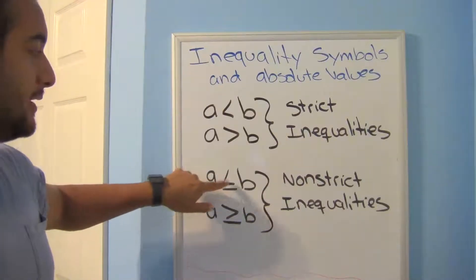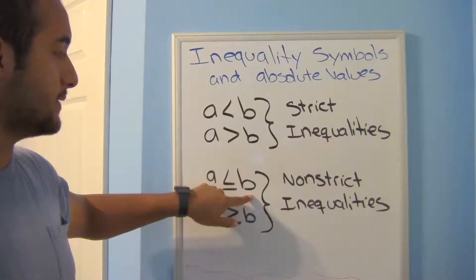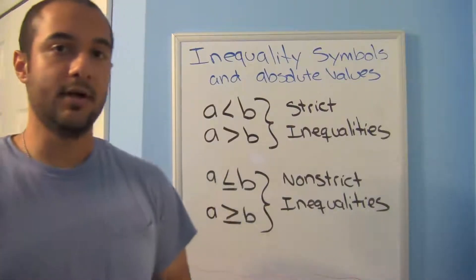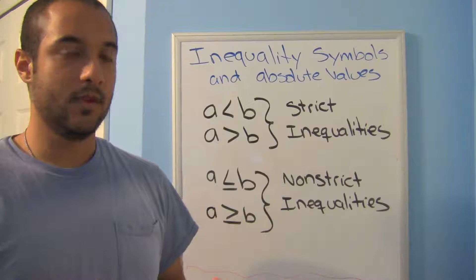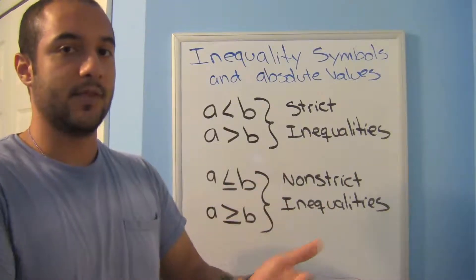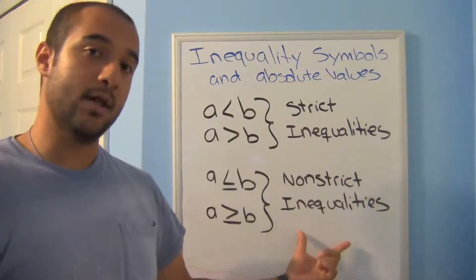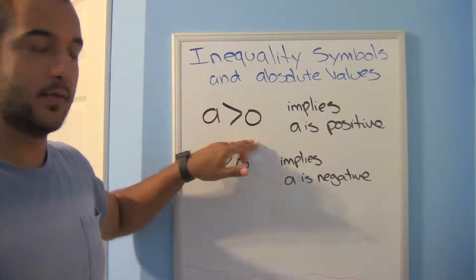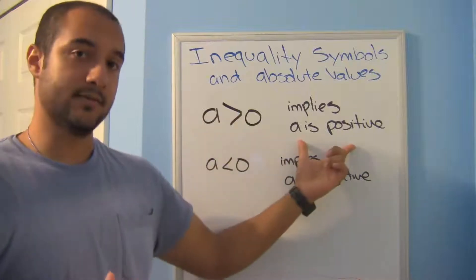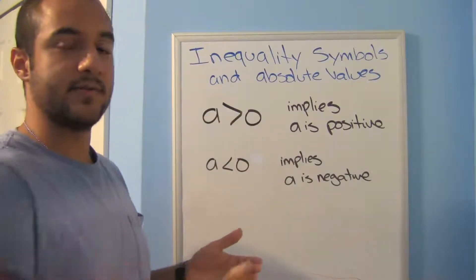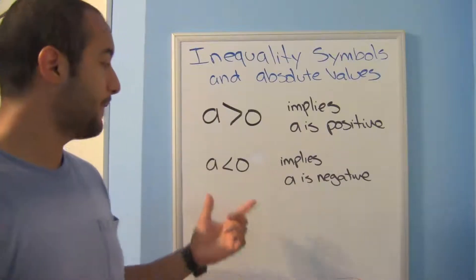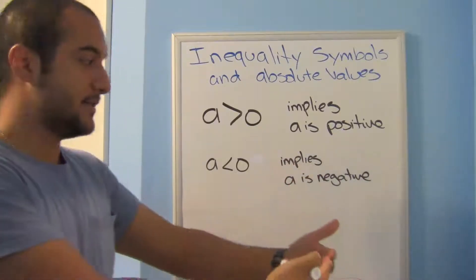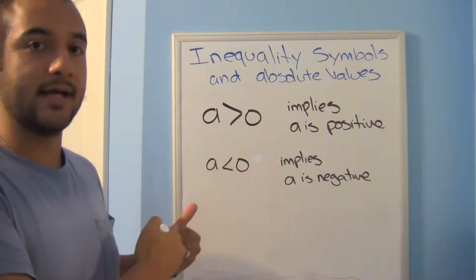Now look at a less than or equal to b — you're adding something else. These are called non-strict inequalities. With that same scenario, if you're asking for people that are 55 or younger, that includes people who are exactly 55, so you're not as strict. If a is greater than zero, that implies all a values are positive. If a is less than zero, it implies a is negative — anything less than zero is on the negative side of the number line.